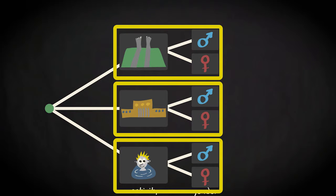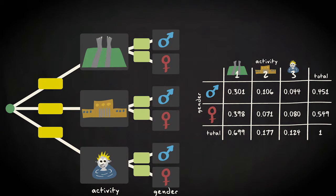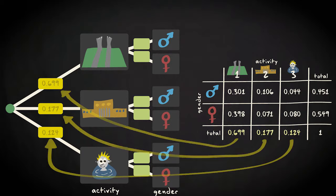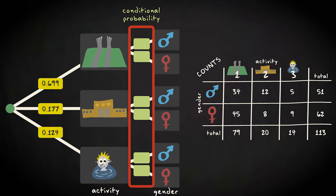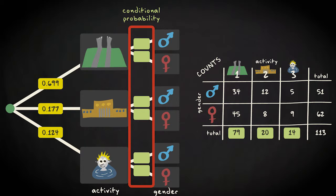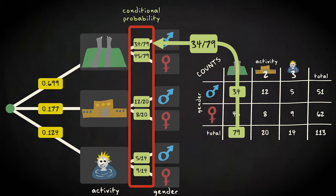You'd find these probabilities along each branch. The marginal probabilities for the activities would be placed at the first node. In the second step the split is by gender — here you would deal with conditional probabilities: gender given that an activity is known. You would calculate these probabilities by dividing the counts for male and female per activity by the total people in that activity, not the total at the entire beach.